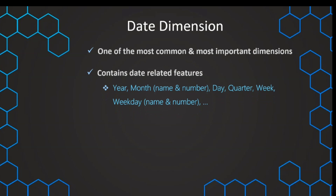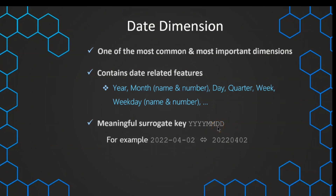The date dimension contains all date-related features we want to analyze, such as the year, the month name and month number, the day in the month, the quarter, the week, and the day of the week — again both as a name and as a number, so Monday could be one, Tuesday could be two, and so on. One special thing about the date dimension is its surrogate key.